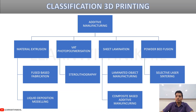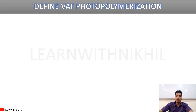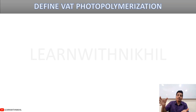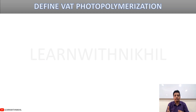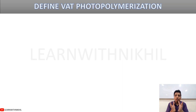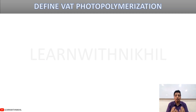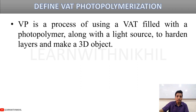Now let's define vat photopolymerization. 'Vat' refers to the container or bucket in which the liquid is poured, and 'photopolymerization' refers to the use of light or laser. In vat photopolymerization, the container holds a photopolymer or resin liquid. When that resin is exposed to UV light or laser, the exposed area solidifies, and through this layer-by-layer process the 3D object is formed.